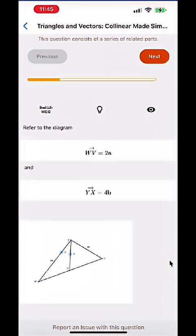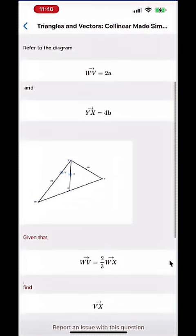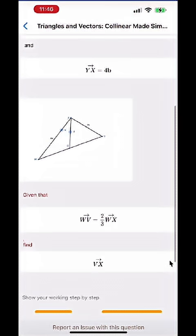You will be shown this question. They ask you to refer to the diagram where wx equals 2a, yx equals 4b and then you have a diagram of the triangle. You can click on it to zoom in and then you are given more clues that given that wv equal to 2/3 wx, you also define vx.